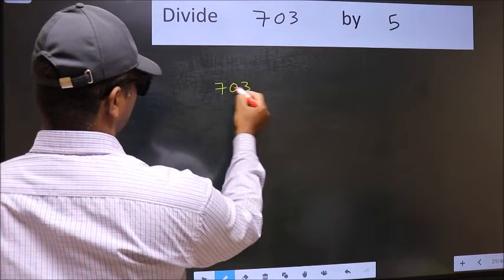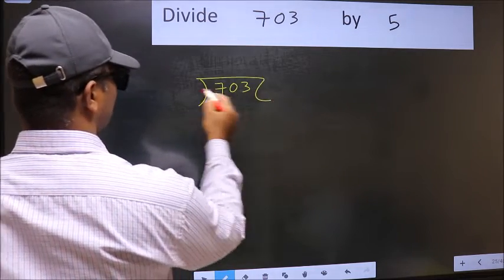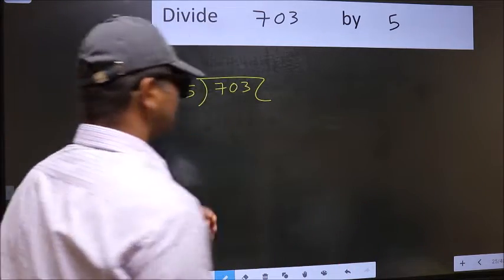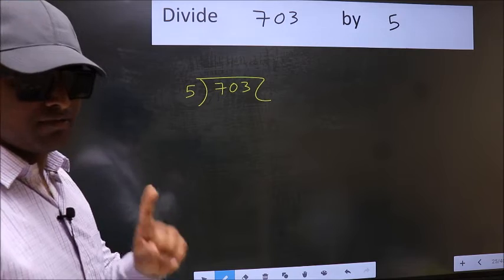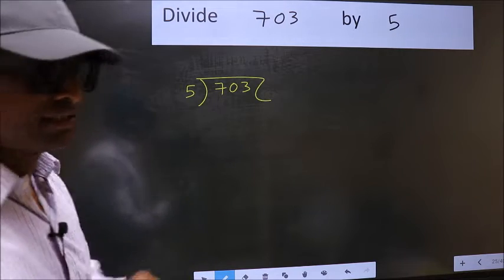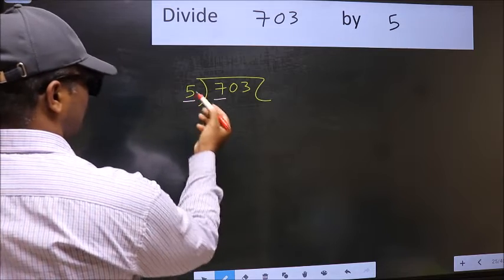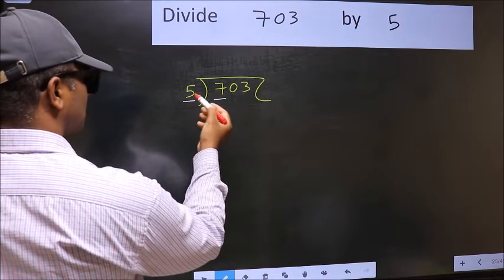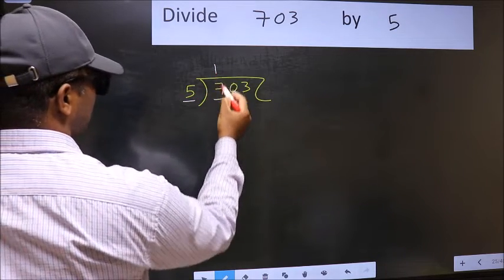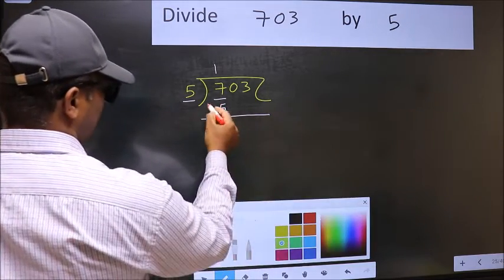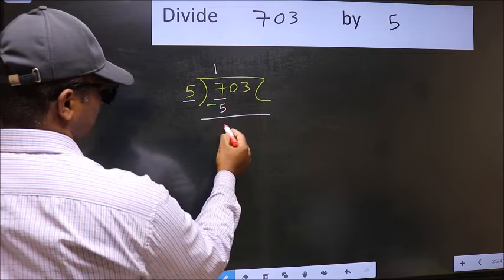703 and 5 here. This is your step 1. Next, here we have 7 and here 5. A number close to 7 in 5 table is 5 once 5. Now you should subtract. 7 minus 5, 2.